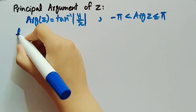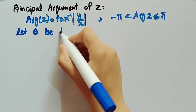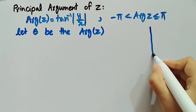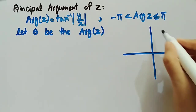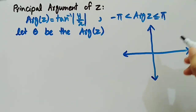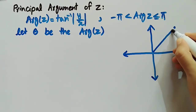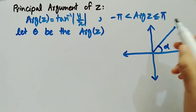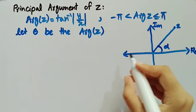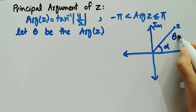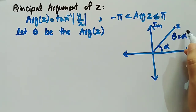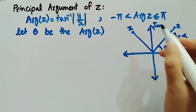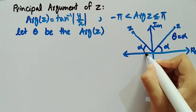Let θ be the principal argument of the complex number z, and consider the complex plane. If z is in the first quadrant and makes an angle α with the real axis, then the principal argument θ equals α. If z is in the second quadrant and makes an angle α with the positive real axis, a different formula applies.